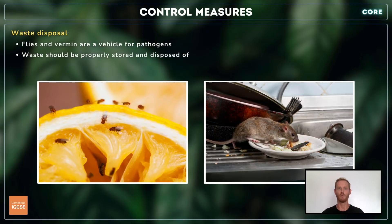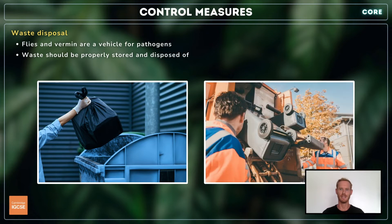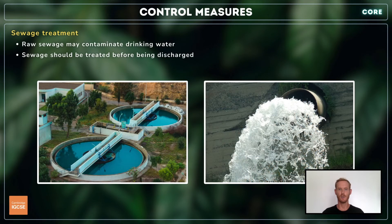Pathogens that breed on rotting food and other waste may be transferred by the bodies of flies and vermin if waste is improperly stored or disposed of. Bins should be strong and have a closely fitting lid, and waste should be taken away and either burned or buried. Finally, to prevent harmful bacteria in human faeces from entering the water supply, sewage must be treated in a sewage works before being released into rivers.